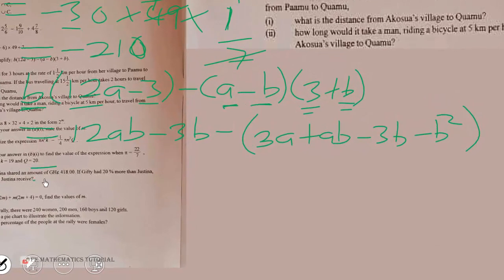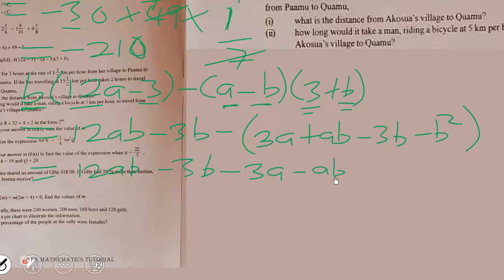Regrouping the like terms, we get 12ab minus ab, then minus 3b, and plus b squared.